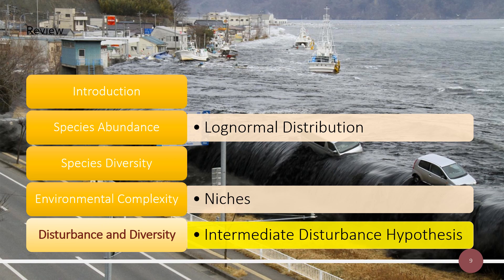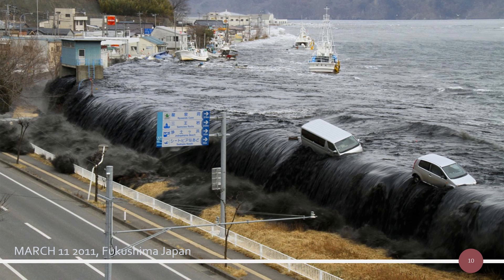With climate change, we are having more catastrophic disturbance events. More heat in the atmosphere and ocean leads to more storm and flooding events. The image here shows a flood caused by the 2011 earthquake in Japan near Fukushima, where the tsunami carried black, silt-laden water that knocked people over and caused much more destruction. Understanding disturbance will be increasingly important as we move into the future.